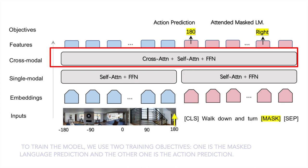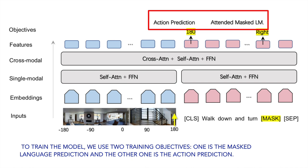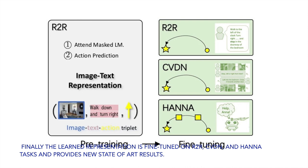To train the model, we use two training objectives: masked language prediction and action prediction. Finally, the learned representation is fine-tuned on R2R, CVDN, and HANA tasks, and provides new state-of-the-art results.